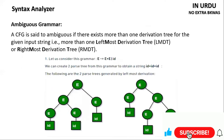Next topic is Ambiguous Grammar. Ambiguous Grammar is one issue that arises when creating a CFG. For example, we have a CFG which has more than one parse tree. We don't know which way the compiler should go — rightmost or leftmost. A CFG is said to be ambiguous if there exists more than one derivation tree for the given input string.